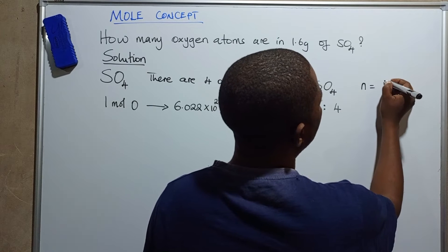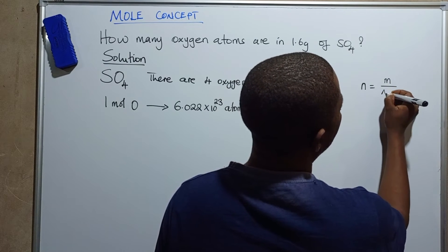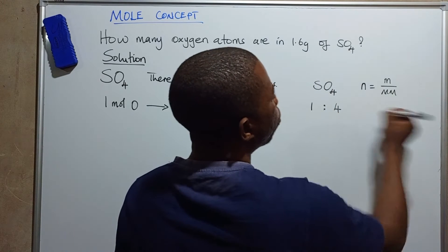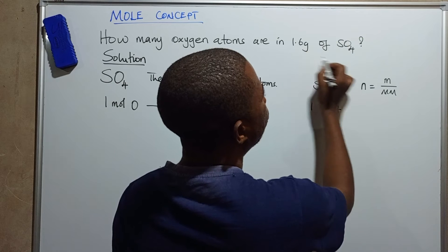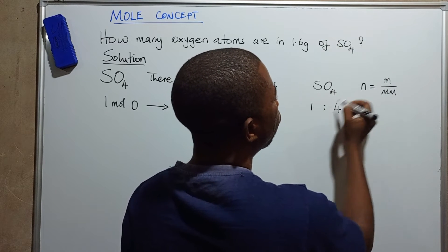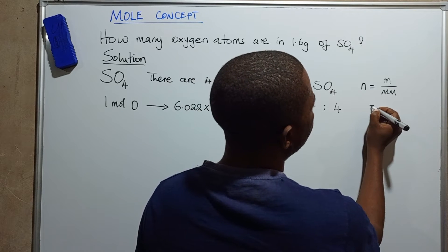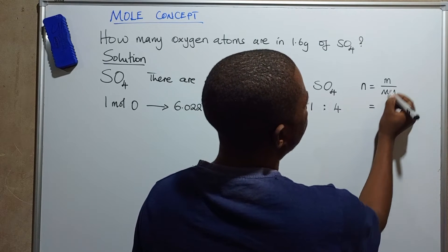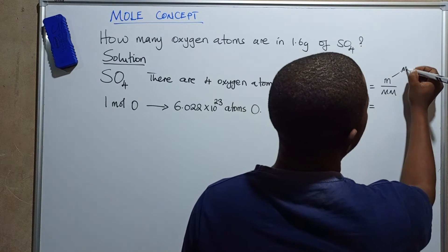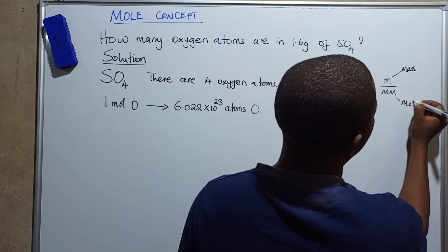The number of moles is given by mass divided by molar mass. We will use this formula to find the number of moles of sulfur trioxide, and then use that to find the number of moles of oxygen. So: number of moles equals mass over molar mass, where m stands for mass and the denominator is the molar mass.